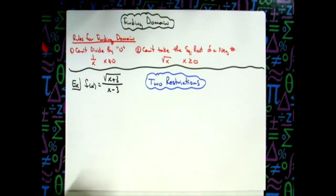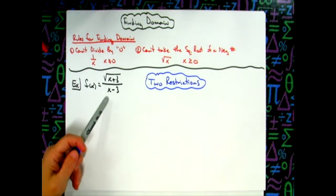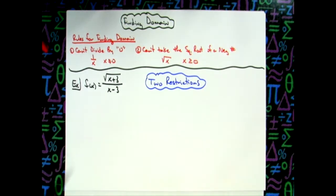In this video we're going to take a look at one example of finding domain. It's going to be a rational function and it's going to have a square root there in the numerator.